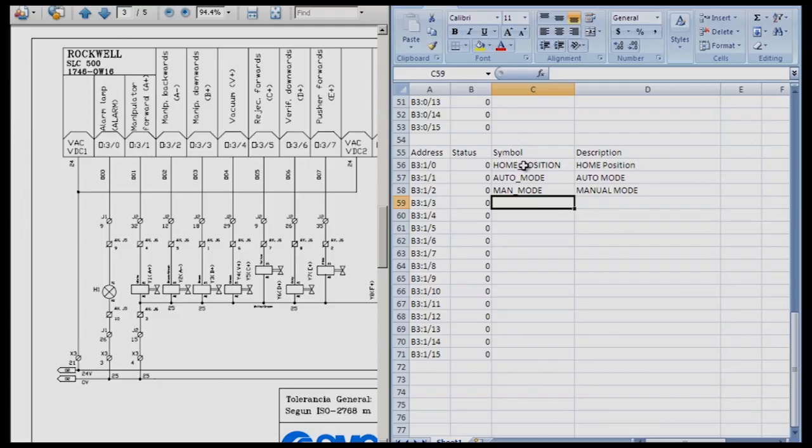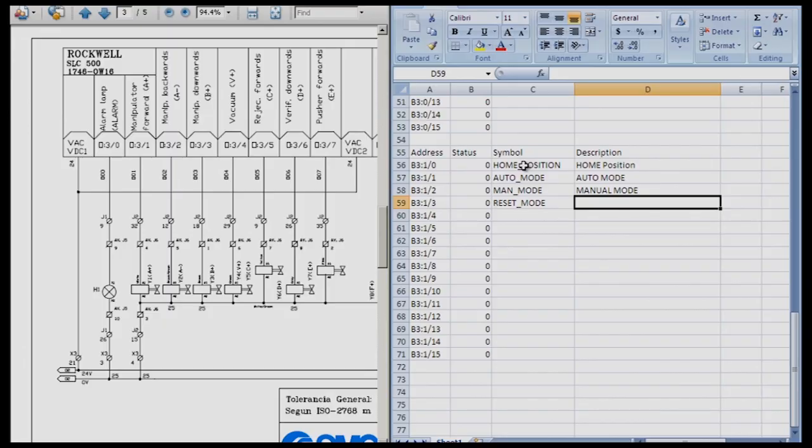Well, what happens if something goes wrong and we need to get the actuators back to where they need to go? We need to do reset mode. So I'm going to program what's called reset mode to an internal bit, a B3 colon one three. Now you as the programmer, you can choose any bit that you want. I typically like to start with a bit series and then just keep going: B3 zero, B3 one, B3 two, B3 three, et cetera. So this being now the description for reset mode.